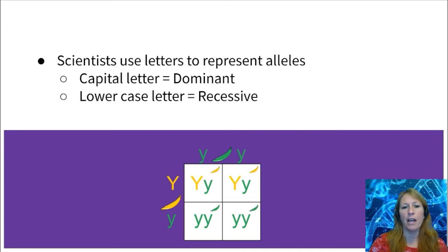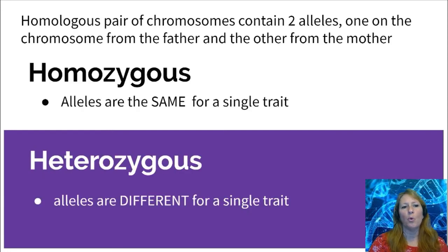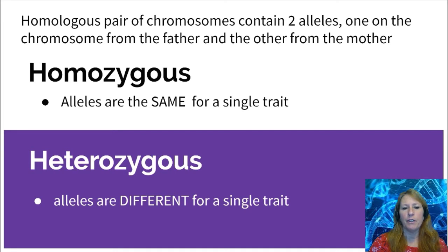When scientists predict the outcome of a cross, they use symbols to represent alleles. A capital letter represents the dominant allele, and a lowercase letter represents the recessive allele, as seen in a Punnett square. Homologous pairs of chromosomes contain two alleles — you get one from the father via sperm and one from the mother via eggs.